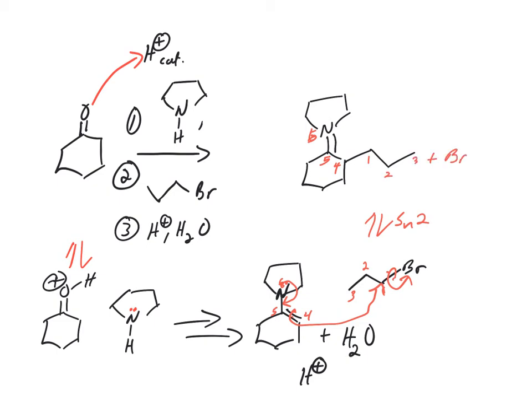We have Br minus—we lost Br. We have a plus charge on the nitrogen.